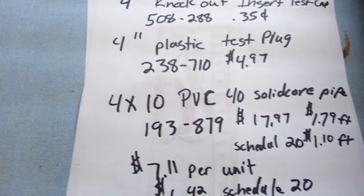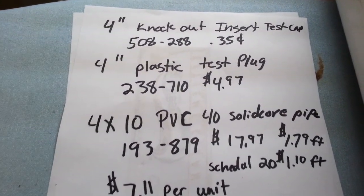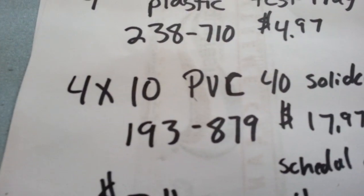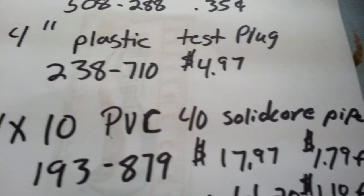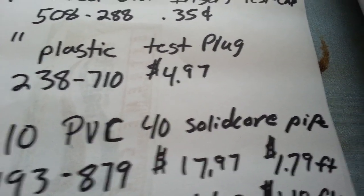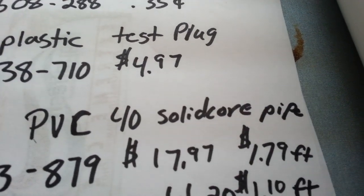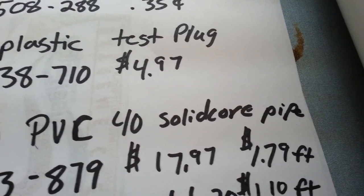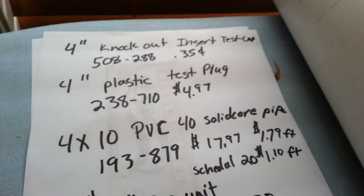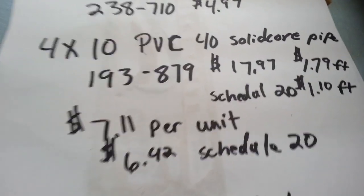Now the great thing about this survival cache: you buy the 4-inch by 10-foot PVC schedule 40, the SKU number is 193879, it's $17.97. So that actually breaks it down for every one-foot survival cache is $1.79. So with that, you can actually get your whole unit at $7.11 for a one-foot survival cache.